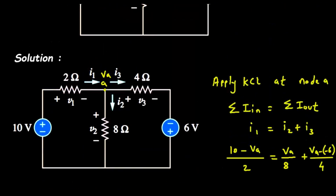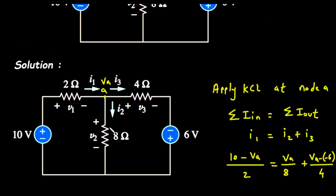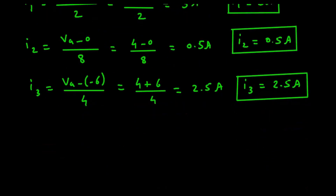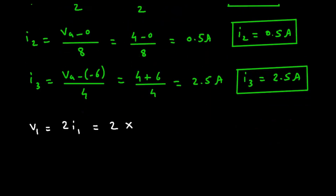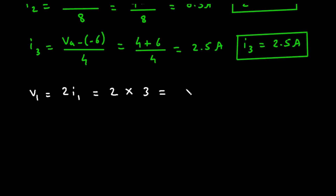Now we can find V1, V2 and V3. V1 = 2 × I1 = 2 × 3 = 6 volts. Therefore V1 equals 6 volts.